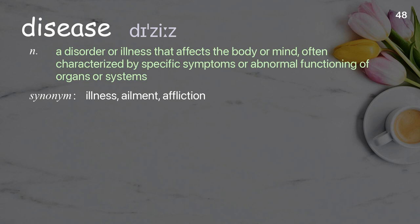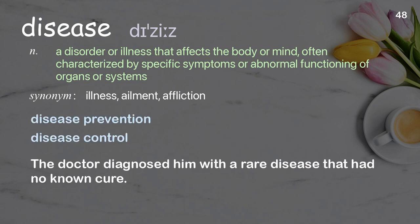Disease: a disorder or illness that affects the body or mind, often characterized by specific symptoms or abnormal functioning of organs or systems. Examples: disease prevention; disease control; the doctor diagnosed him with a rare disease that had no known cure.